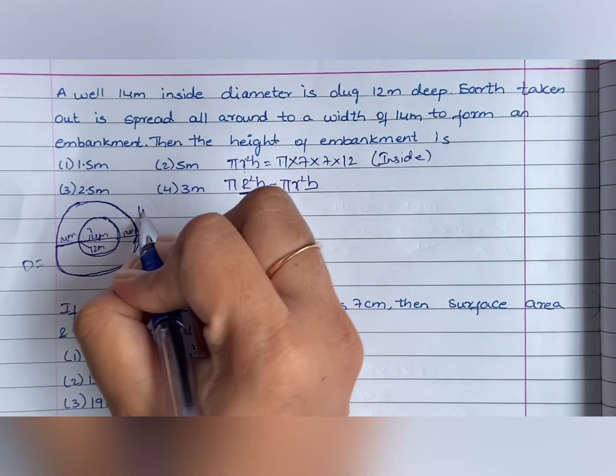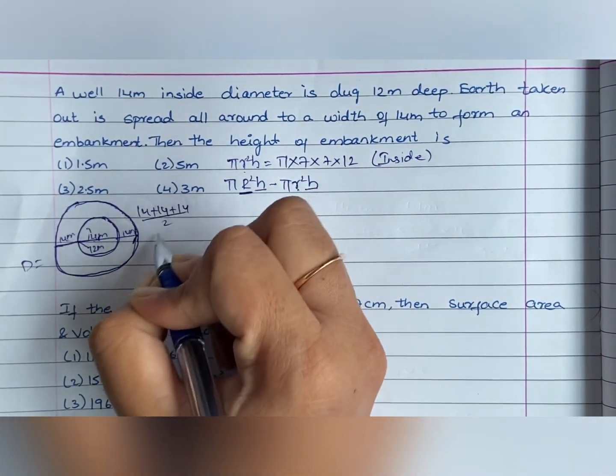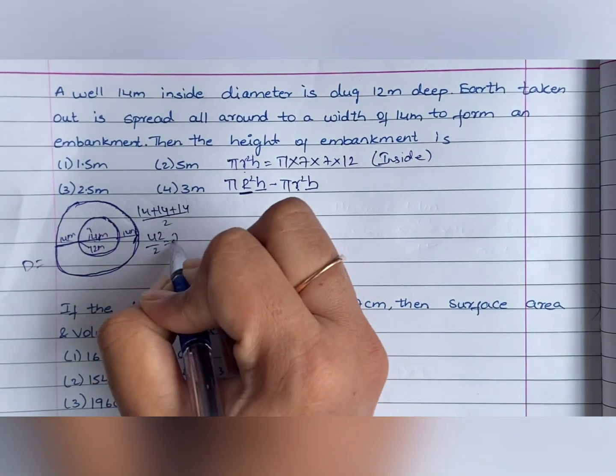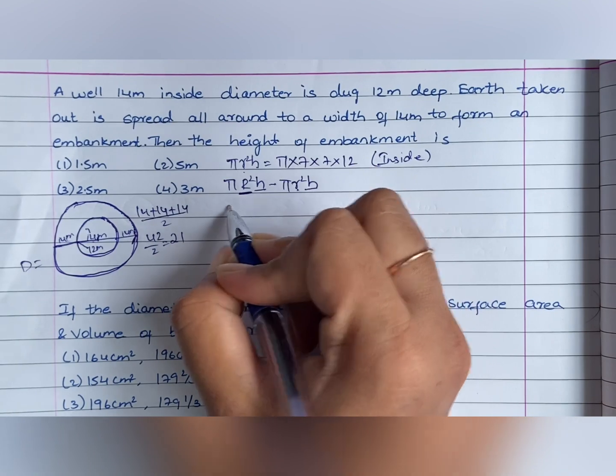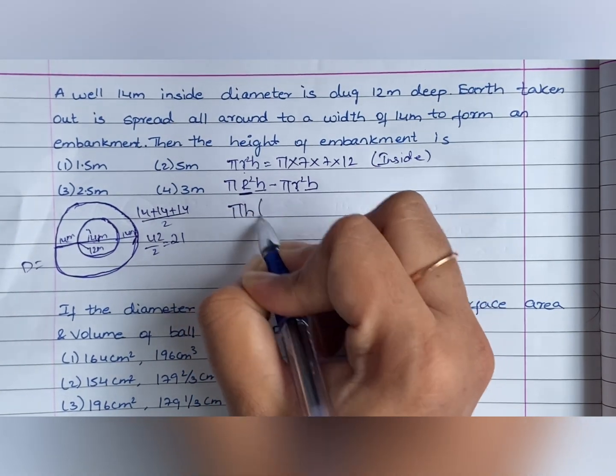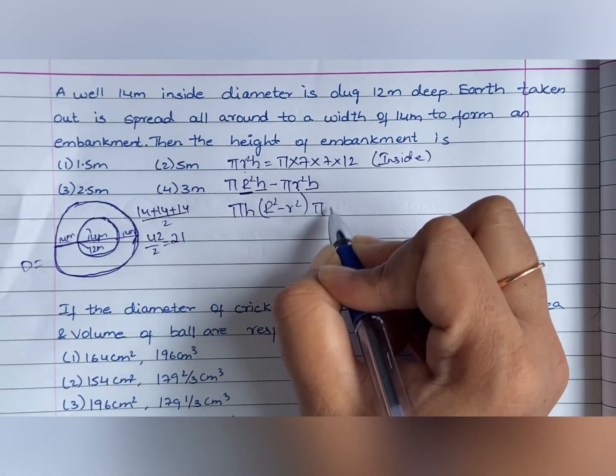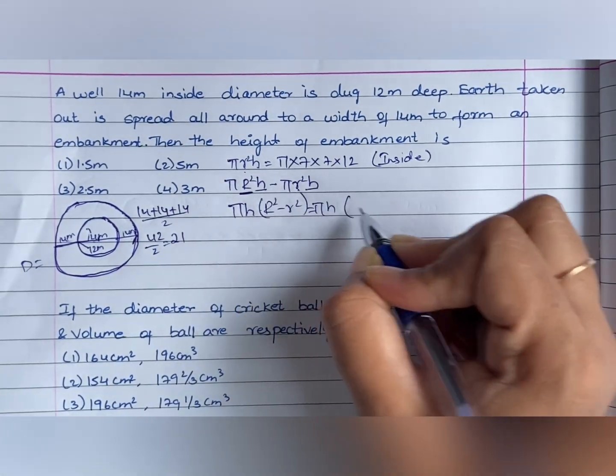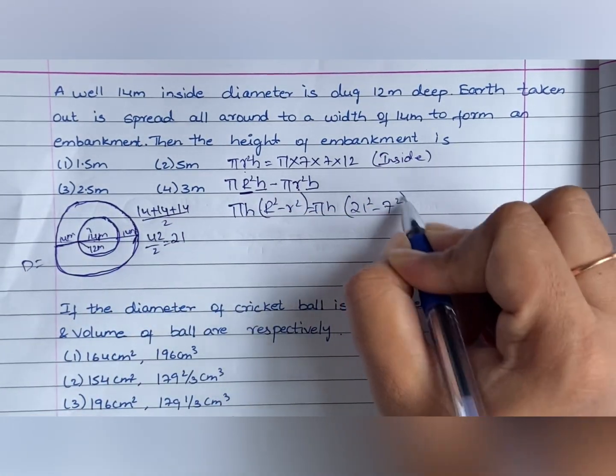So, diameter is 14 plus 14 plus 14. That is divided by 2. 42 by 2 that is 21 is the radius of this bigger circle. So, pi h is common. r square minus r square is equal to pi into h into 21 square minus 7 square.